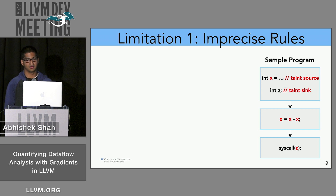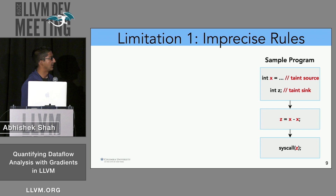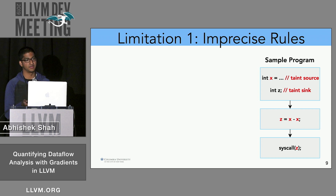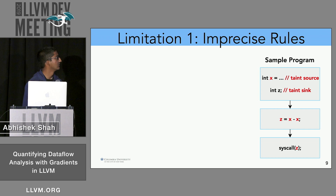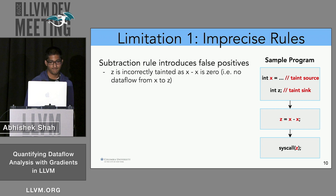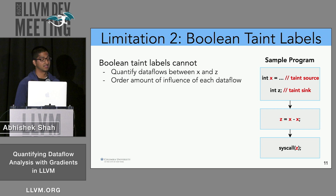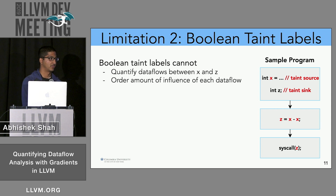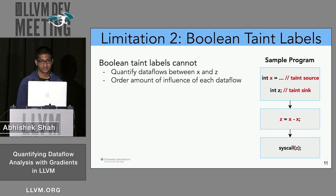One limitation of this approach is that some rules can be imprecise. For example, with a subtract instruction — z equals x minus x — the rule would mark z as tainted if x is tainted. But this is a false positive: x minus x is zero, so there's no way x can affect z. Additionally, taint labels are Boolean and discrete, so you cannot quantify data flows or determine how strongly x affects z, making it impossible to assign an ordering.